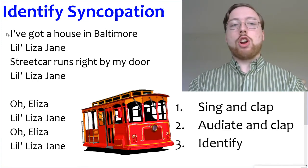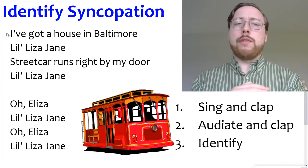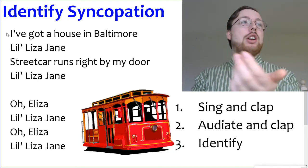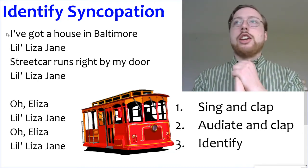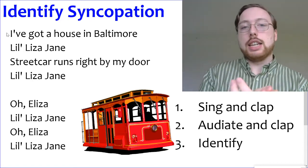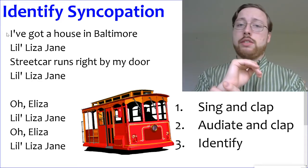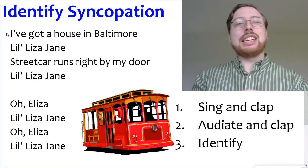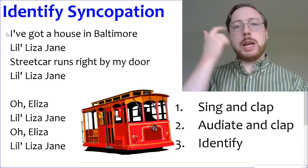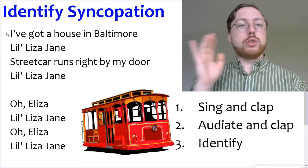We just learned Lil Eliza Jane, but now let's figure out where the syncopation is in this song. We practiced that syncopation — remember, we have a pattern that has the ti-ta-ti in it. So before you were practicing ti-ta-ti-ta, but it could also be ti-ta-ti-ta-ta, or ti-ta-ti-ti-ti-ta. It could even be ta-ti-ta-ti-ta, putting the ti-ta-ti in the middle. It could be at the end — ta-ta-ti-ta-ti. It's a little complicated. So we're going to sing and clap our song to get the rhythm in our body, then we'll audiate — put the melody in our head and the words on our lips — and see if we can figure out where that ti-ta-ti is.